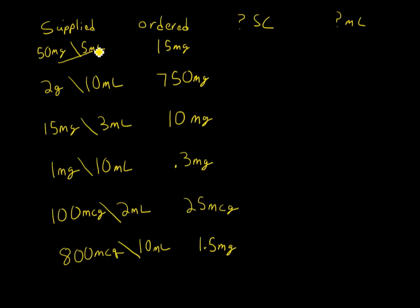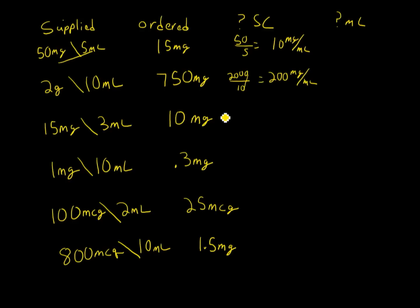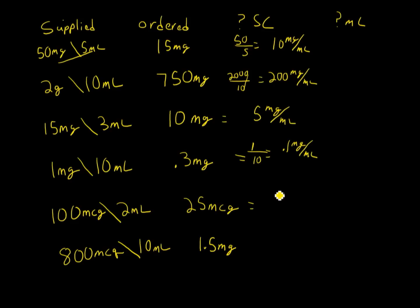Now the simple concentrations: Problem 1 — 50 divided by 5 gives 10mg/mL. Problem 2 — 2 grams is 2,000mg over 10mL gives 200mg/mL. Problem 3 — 15 divided by 3 gives 5mg/mL. Problem 4 — 1mg divided by 10mL gives 0.1mg/mL. Problem 5 — 100 micrograms in 2mL gives 50 micrograms/mL. Problem 6 — 800 micrograms in 10mL gives 80 micrograms/mL.